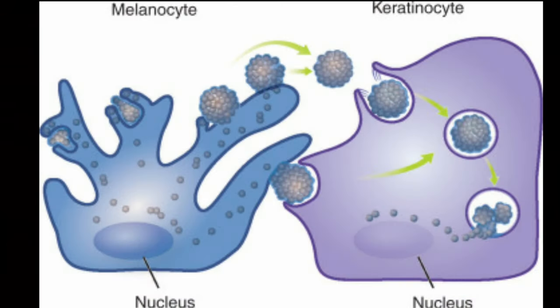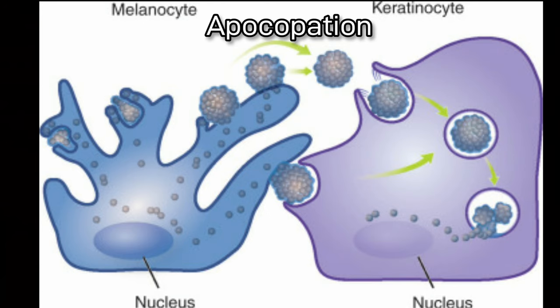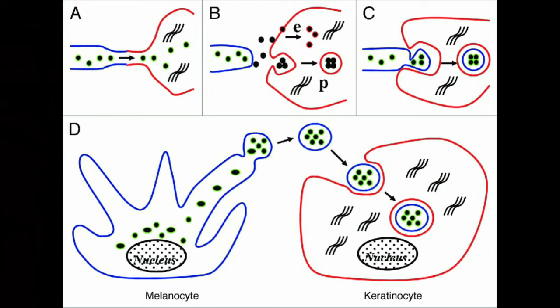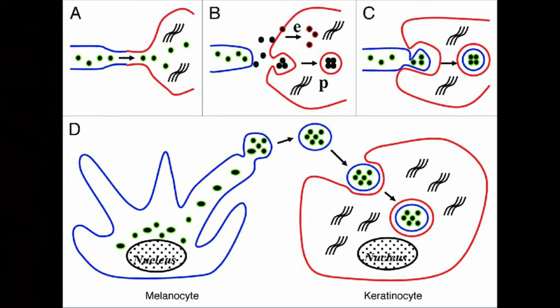Once the melanosome reaches the tip of the dendrites, it is transferred to the keratinocyte — a process known as apocopation. There are four ways this transfer can occur: melanin can be secreted into the intercellular space for the keratinocyte to take up; there can be membrane fusion of the melanosome to the melanocyte plasma membrane and then to the keratinocyte; membrane-bound vesicles containing melanin can be shed and taken up by the keratinocyte; or via cytophagocytosis, where the dendritic process of the melanocyte is engulfed along with its pigment.